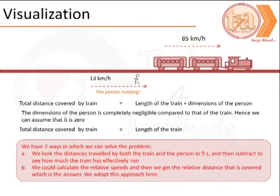Let us now look at the second visualization. In this scenario, the train has overtaken the individual running. What is important to note here is that while the train was overtaking, the individual continued running at a constant pace.